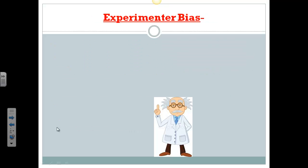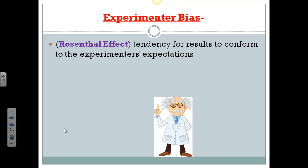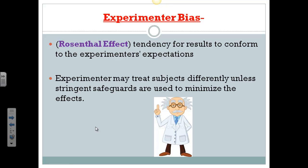Another bias is experimenter bias, and this occurs when the experimenter gets the results that he or she wanted to get. This is also called the Rosenthal effect. David Rosenthal, who kind of discovered and labeled this tendency, basically said that it's quite possible for the experimenter to treat the subjects differently, which might lead to the results the experimenter expects or wants. So we have to have really rigid safeguards in order to prevent this from happening.